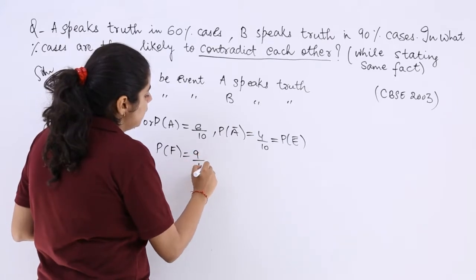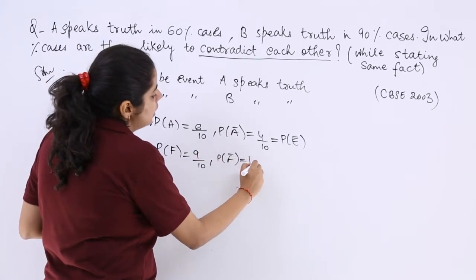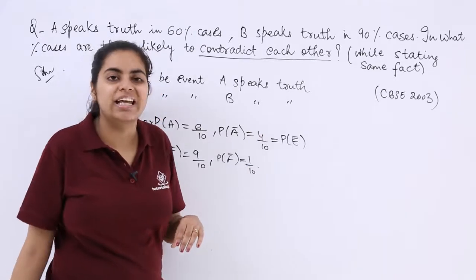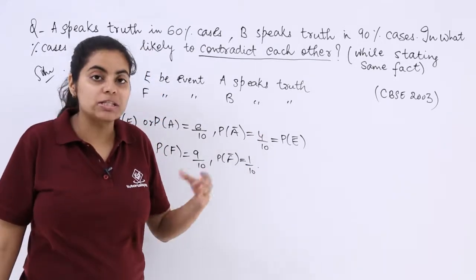That is 90% of the cases. Probability of not F is 10% of the cases, 10 over 100. I will just remove the percentage.